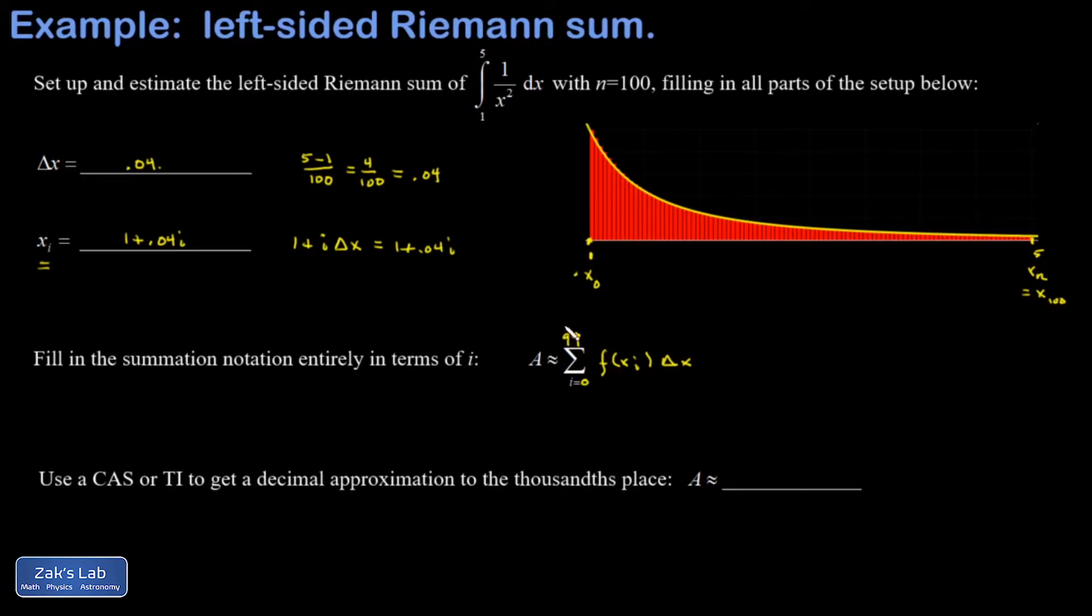Just a quick check. When I plug in the upper limit, I get f of x99, which is 1 to the left of that last one, which is good because I'm trying to measure the height of each rectangle at the left-hand side.